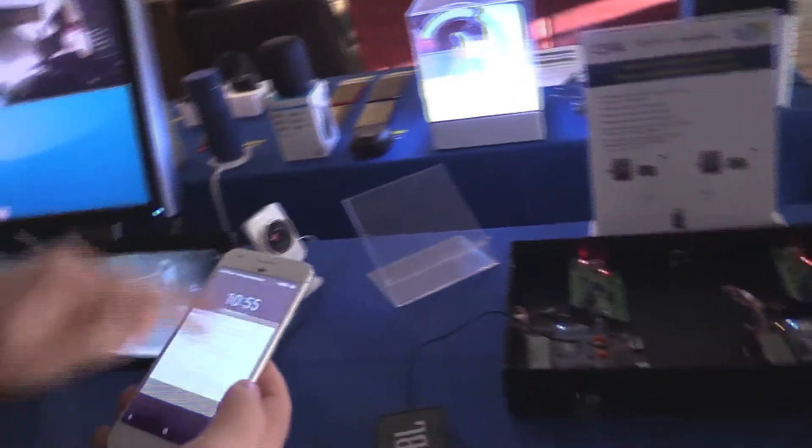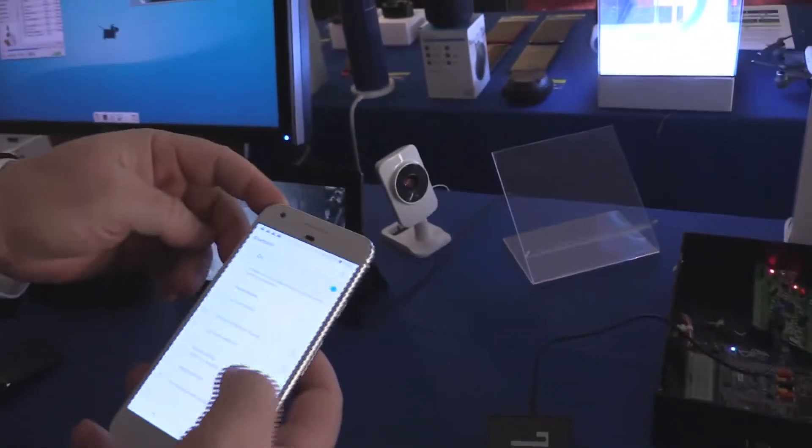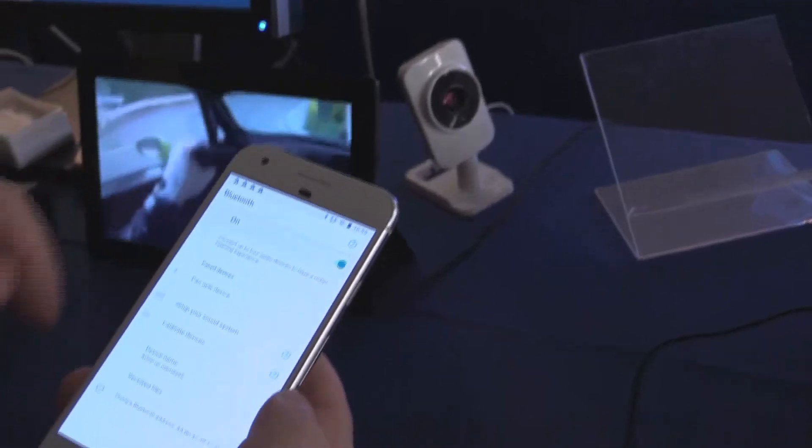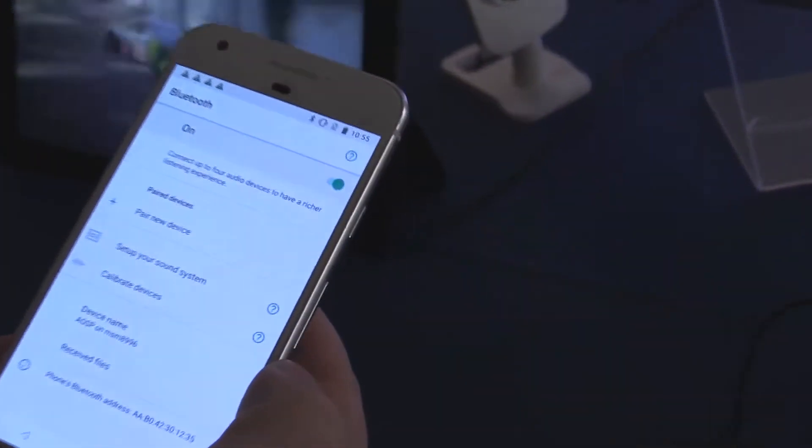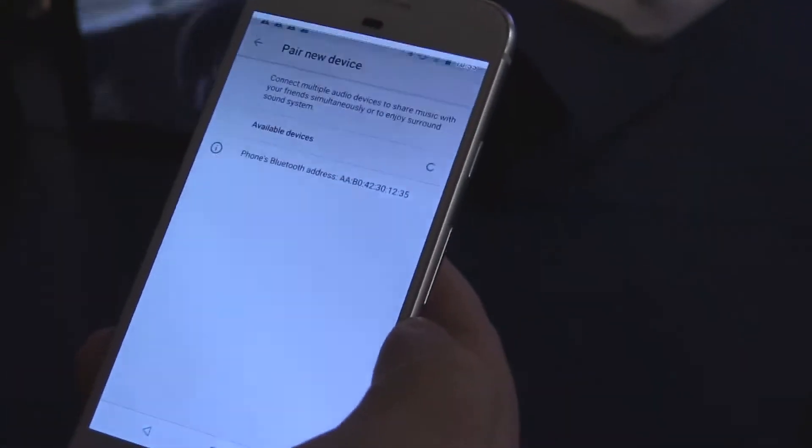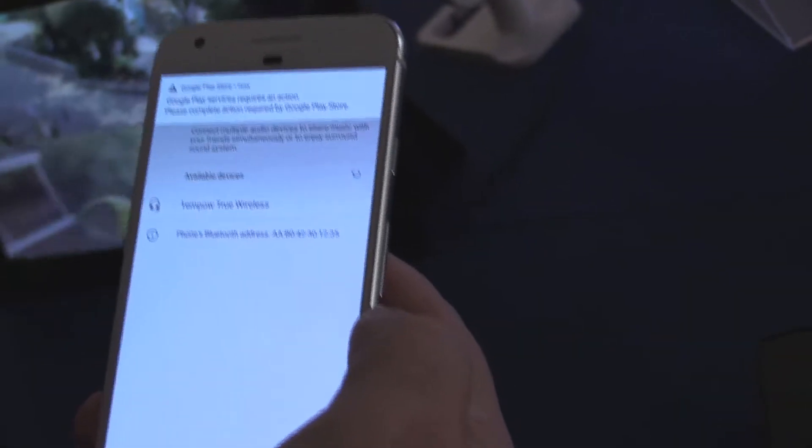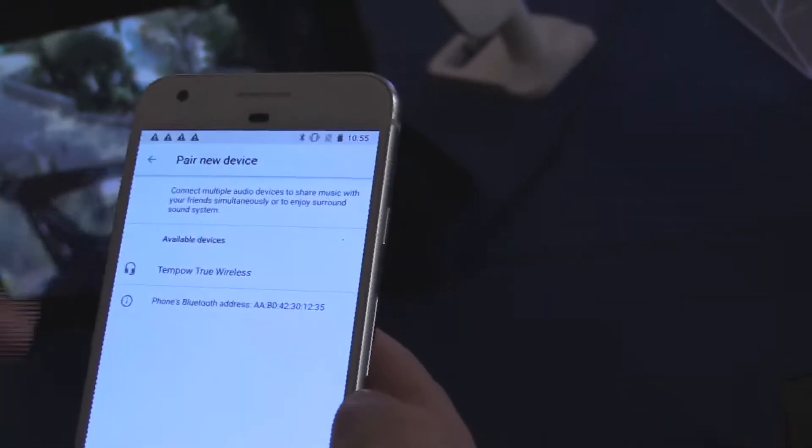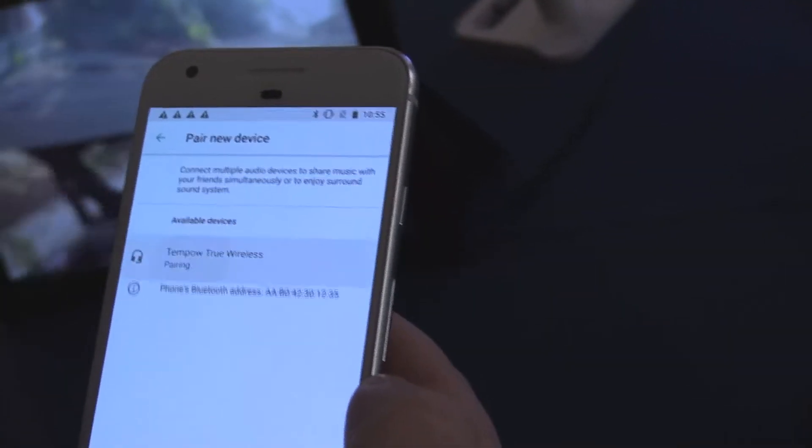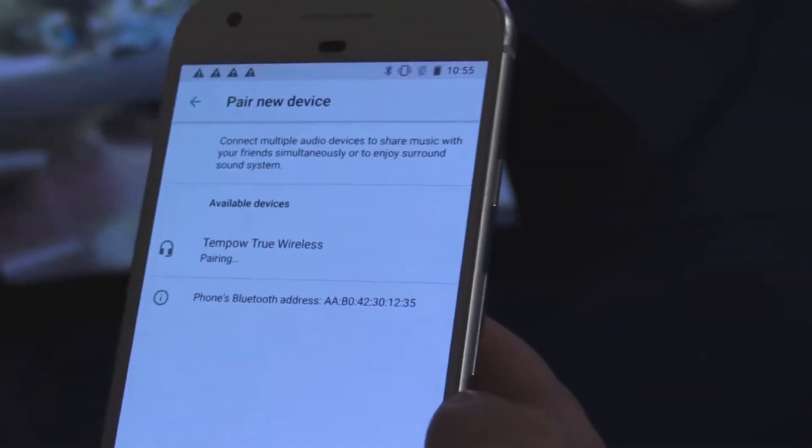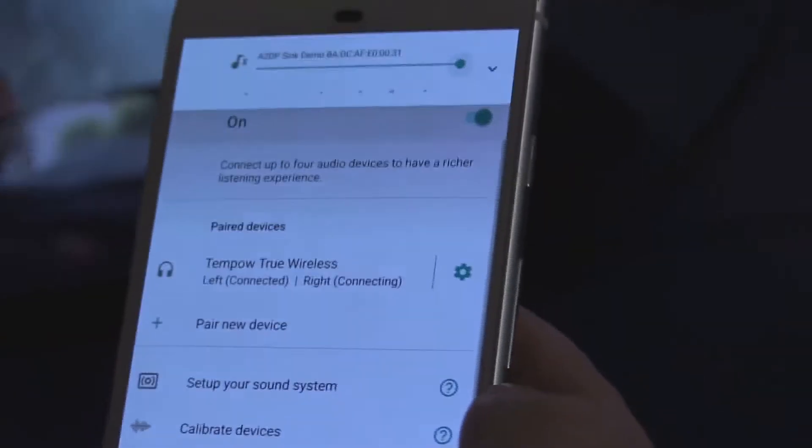I don't know if you can close up on my phone. So I'm going to the Bluetooth setting and I'm going to pair a new device. When I click on the menu, I can see Tempo true wireless headset. So I click on it for the pairing. And now I'm connected.